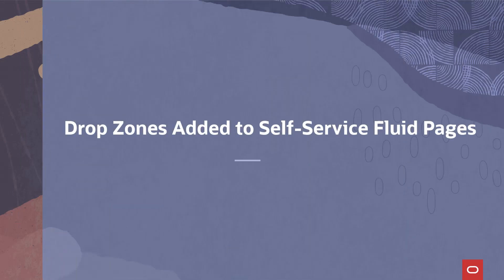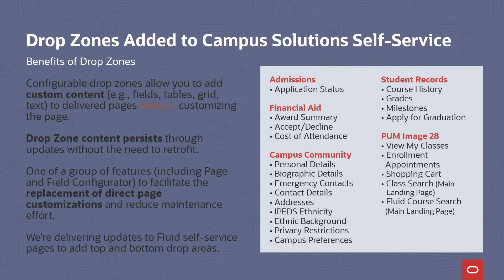As your institution looks for ways to remove customizations to simplify the application of maintenance, let's look at where we've added Drop Zones to pages. Drop Zones let users add fields to delivered pages without customizing the delivered component or page definition. Fields are displayed and processed along with fields from the main page definition and any nested subpages or secondary pages. Drop Zones have also been added to the top and bottom areas of these Student Records Fluid pages: View My Classes, Enrollment Appointments, Shopping Cart, Class Search and Enroll, the Class Search landing page, and Browse Course Catalog, which is the Course Search landing page.